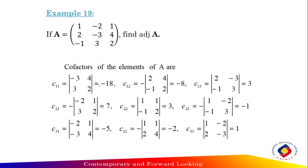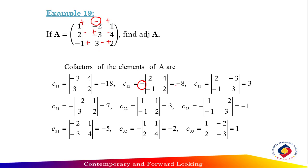The determinant for C11 is [-3, 4; 3, 2] equal to -18. Next, find cofactor C12. Don't forget to apply the plus-minus pattern: plus, minus, plus; minus, plus, minus; plus, minus, plus. C12 is located at a negative sign, so the determinant for C12 — delete the first row and second column — gives [2, 4; -1, 2], which equals -8. C13 is at a positive sign; delete the first row and third column to get [2, -3; -1, 3], so the determinant is 3.